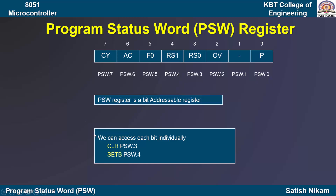For that, we have two instructions: CLR and SETB. If we consider the first instruction, CLR PSW.3 — after execution of this instruction the content of PSW.3, which is the third bit, becomes 0. If we consider SETB PSW.4, it is going to make the content of that fourth bit 1. Like this, we can access each bit separately.